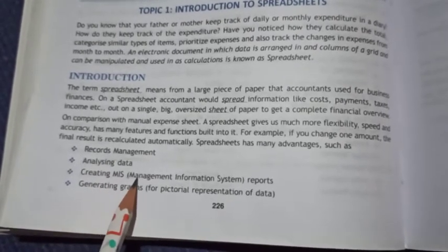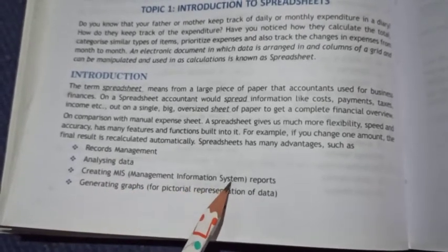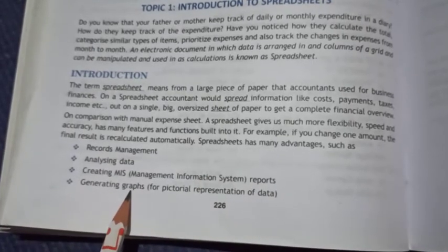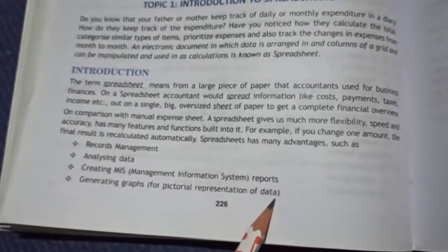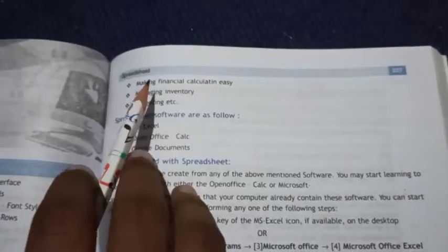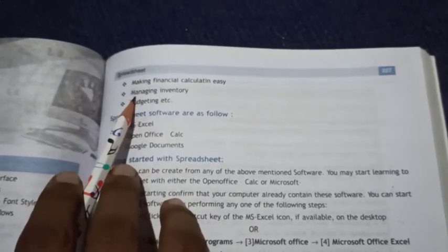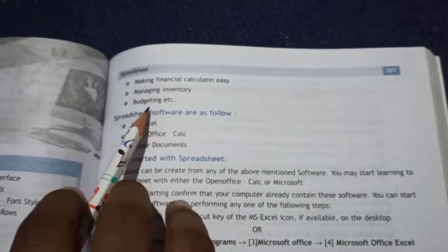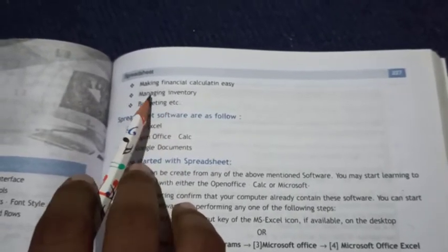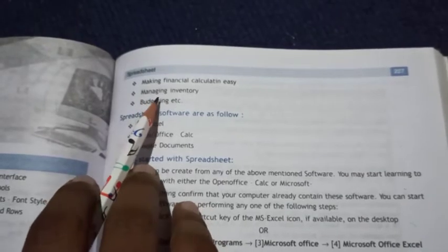What is the meaning of MIS? Management Information System report, generating graphs for pictorial representation of data, making financial reports, managing inventory and budgeting. These are the advantages of spreadsheet.